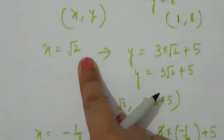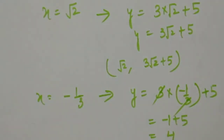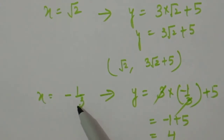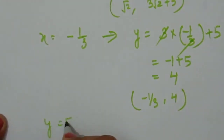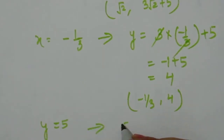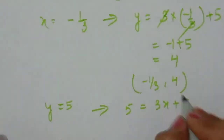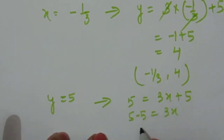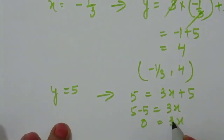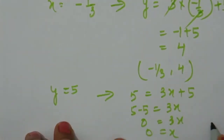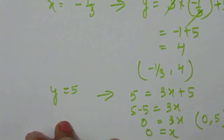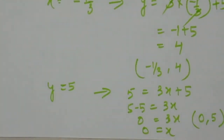This shows that any real number value of x gives an answer for y. We can also substitute y values: if y = 5, then 5 = 3x + 5, so x = 0, giving ordered pair (0, 5). Since any value of x or y gives a valid solution, a linear equation has infinitely many solutions.